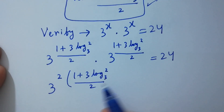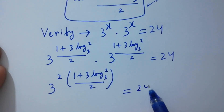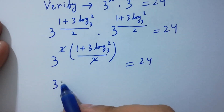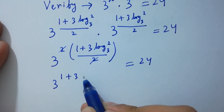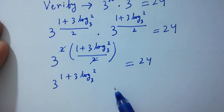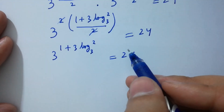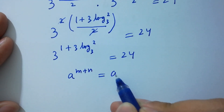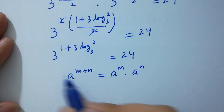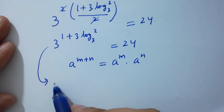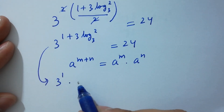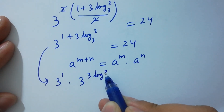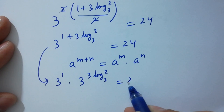Here the 2 and 2 cancel, giving 3 to the power 1 plus 3 log 2 to the base 3 equal to 24. Using the rule a to the power m plus n equals a to the power m times a to the power n, it becomes 3 to the power 1 times 3 to the power 3 log 2 to the base 3, equal to 24.